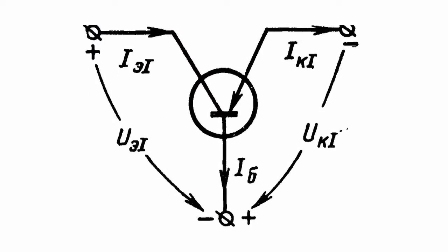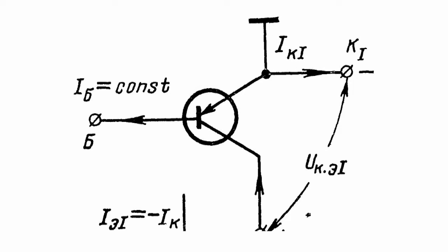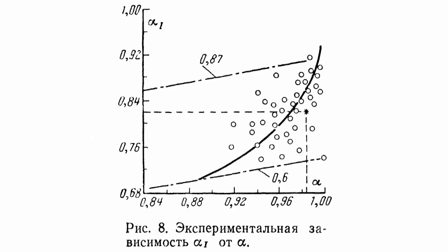First of all, it should be noted that reduction in the current transmission coefficient of the emitter is caused by different areas of the emitter and collector junctions. Using conventional transistors in an inverse circuit leads to the current gain of the circuit being less than one.